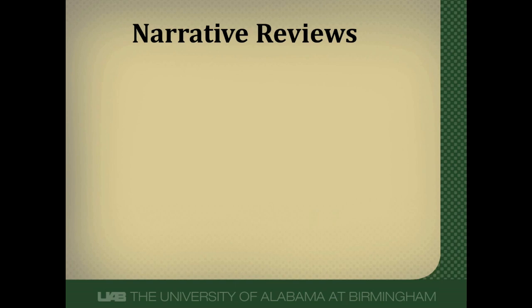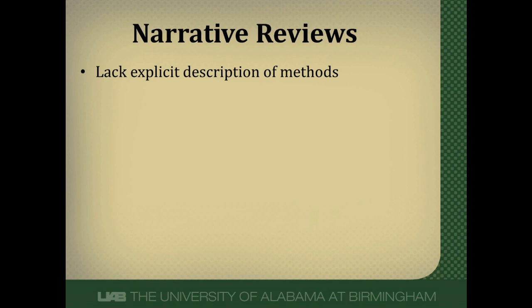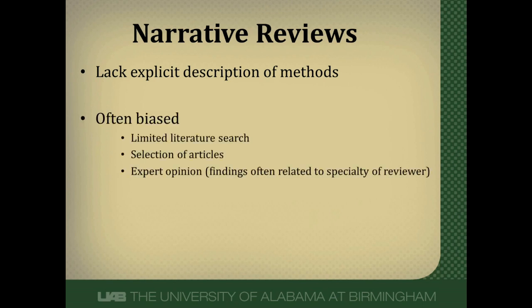Let's look at each of the individual review types. First, we'll start with narrative reviews. The way you know something is a narrative review is it has no method section — no explicit description of how the review was done. They're often biased, unfortunately, because they're often done by experts in the field, and the literature search is often limited to the few articles that support their point of view, resulting in a small number of the whole body of published articles being used.